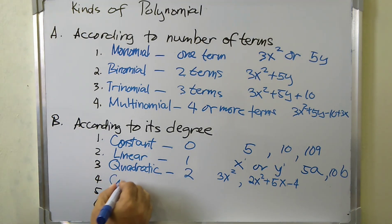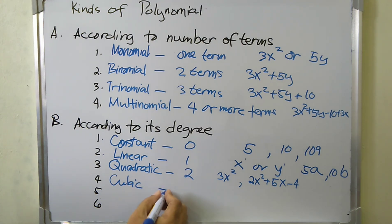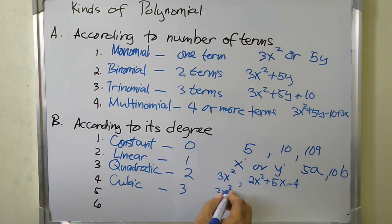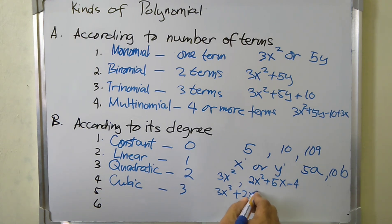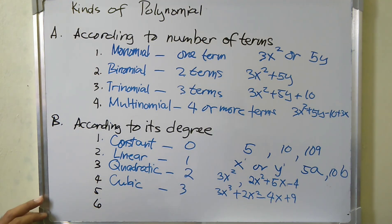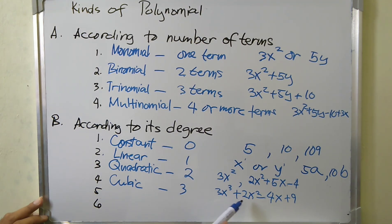The next is cubic polynomial. A cubic polynomial is a polynomial of degree three. For example, we have 3x cubed plus 2x squared minus 4x plus 9. The highest exponent in this polynomial is three, so we call this a cubic polynomial.